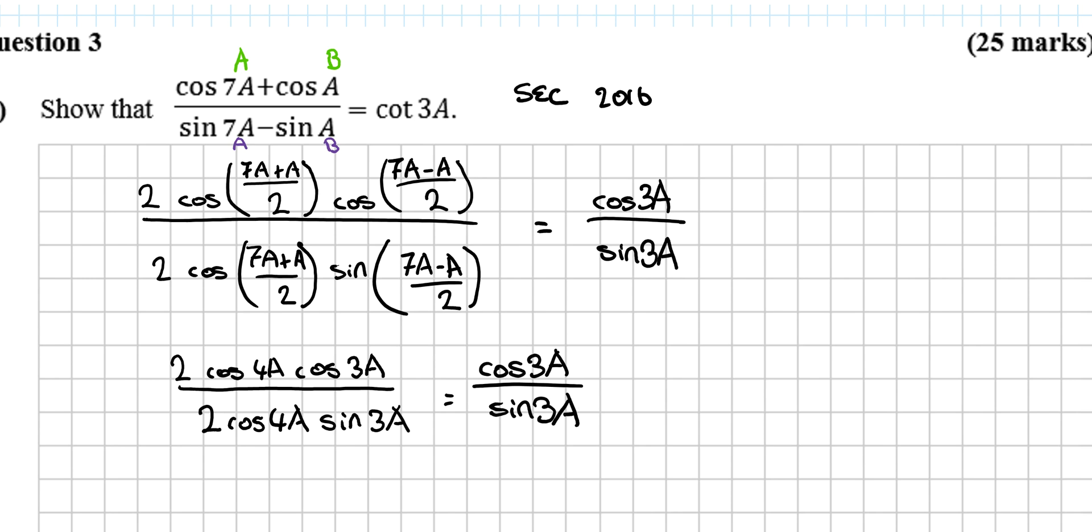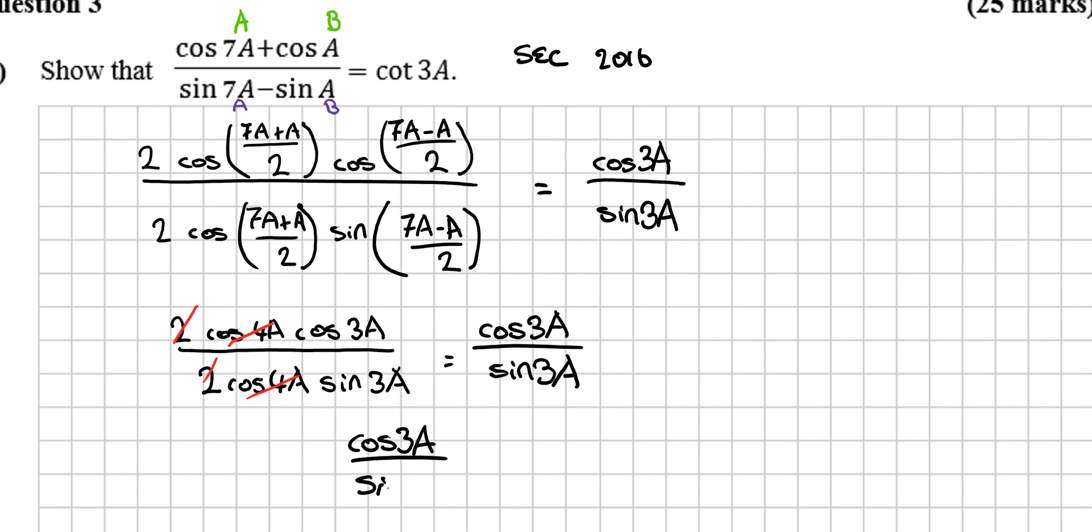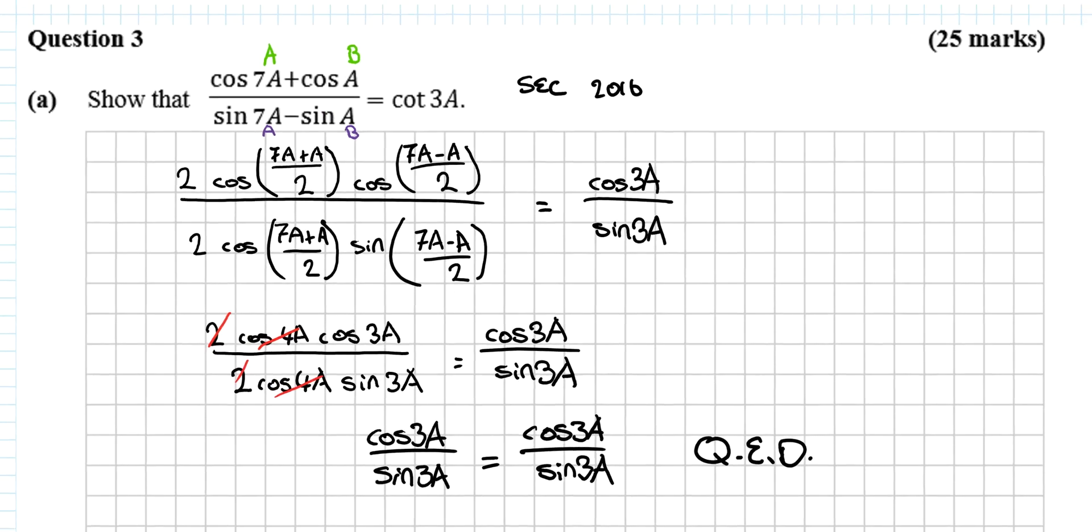One last line, you might notice that 2 divides into 2, cos 4a divides into cos 4a, so you're left with cos 3a over sine 3a is equal to cos 3a over sine 3a. Okay, the left hand side equals the right hand side, so we can say QED. Quite a nice little proof there.